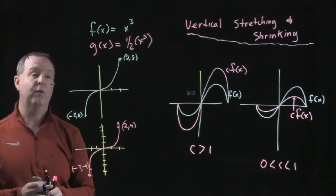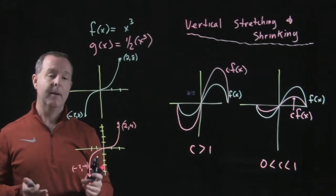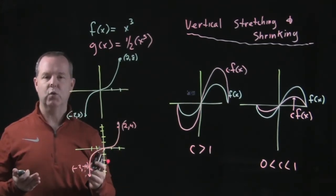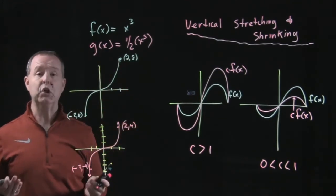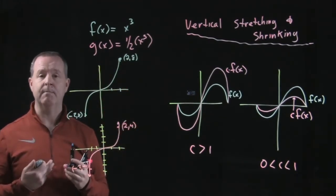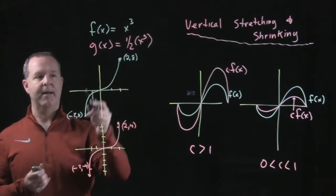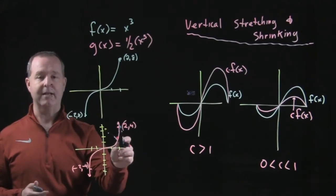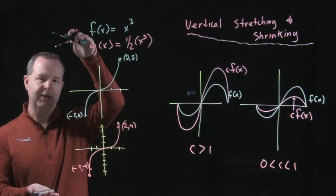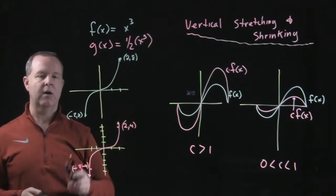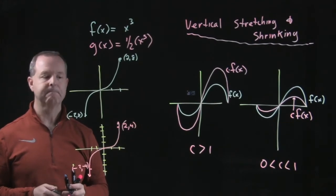One thing to be careful about: it can be hard to tell by the scale of the graph whether it's being squished or lengthened. Both graphs look similar, and the only reason I know the difference is the scale has changed — this was up at a height of 8, and this is up at a height of 4. So imagine the same graph just squished, even though the scales aren't dramatically different.